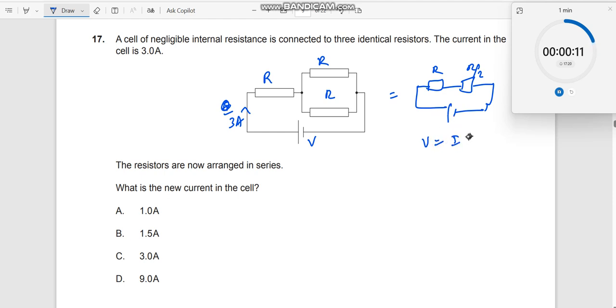So there is a V, V is equal to I into 3R by 2. This is what you get for the first equation.